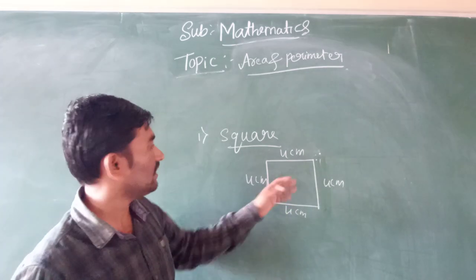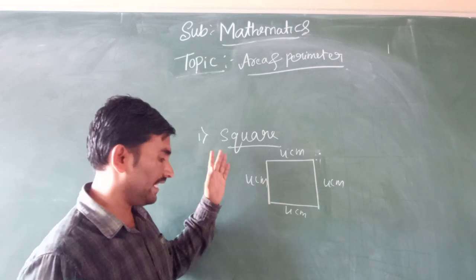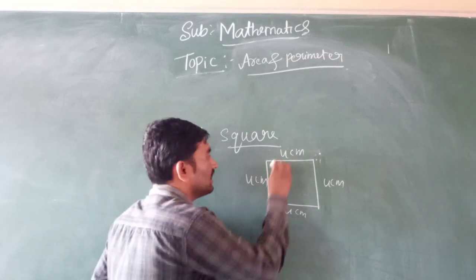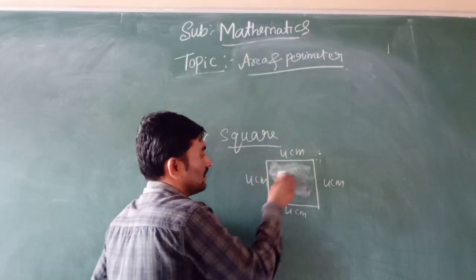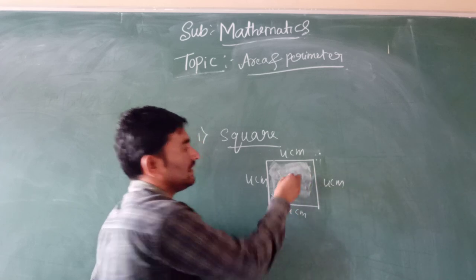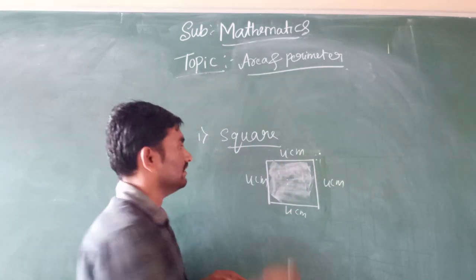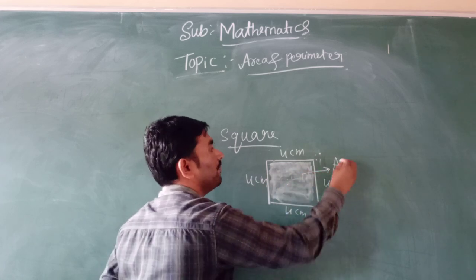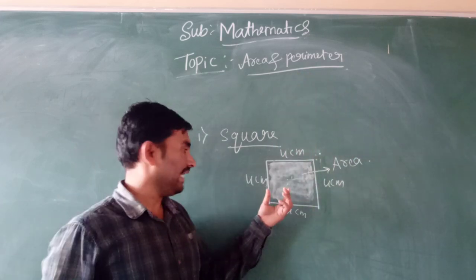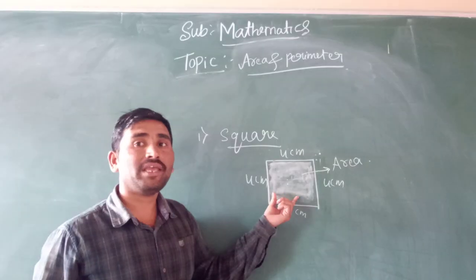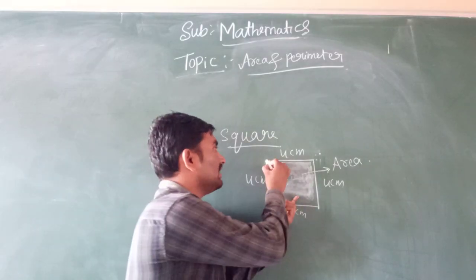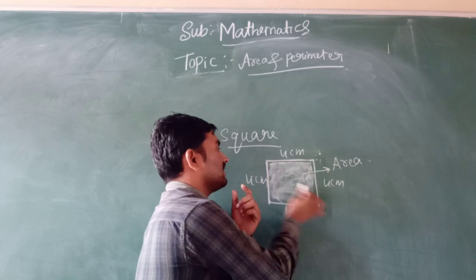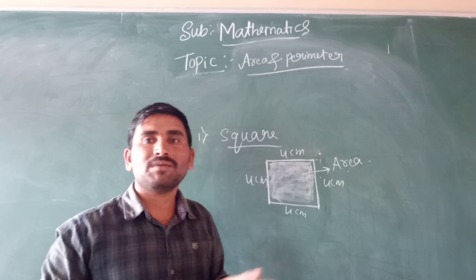So inside of a shape, inside of that space — area means the space inside of a shape. This space is called area. Area measures the space inside of a shape.